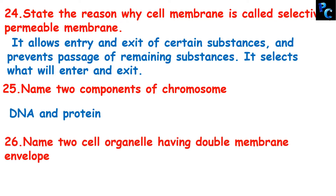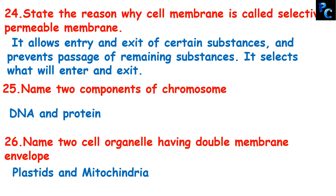Name two cell organelles having a double membrane envelope. One is mitochondria and the other is plastid. They are very important from an examination point of view, so students should have a clear idea about the structure of plastid and mitochondria.